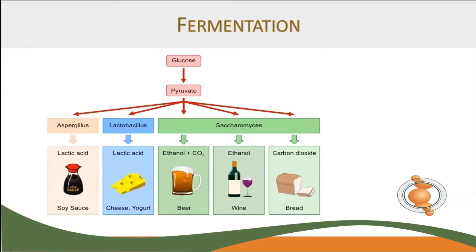Fermentation produces a variety of products, including ethanol, acetic acid, lactic acid, and carbon dioxide. It's basically a mechanism that supports the entire industry of anything related to fermentation. This fermentation process produces many desirable products, such as soy sauce, cheese, yogurt, wine, and bread. When fermentation is not desired, then it's spoilage. For example, you may enjoy yogurt, but you would not like to drink sour milk.